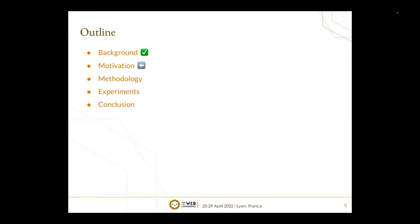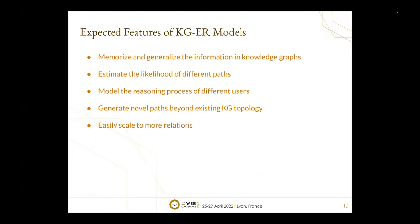Based on this background, we have the following motivations. Considering recall bias, we list five expected features of KG-ER models. First, it is necessary to memorize and generalize information in the KG, as it provides important external knowledge to understand user preference and item attributes. Second, we need to estimate the likelihood of different paths to determine which serves as a better explanation. Third, the model needs to mimic reasoning processes of different users for personalized recommendation. Fourth, a better KG-ER model can discover similar semantics and generate novel paths beyond existing KG topology. Fifth, the model can be easily scaled to more relation types.